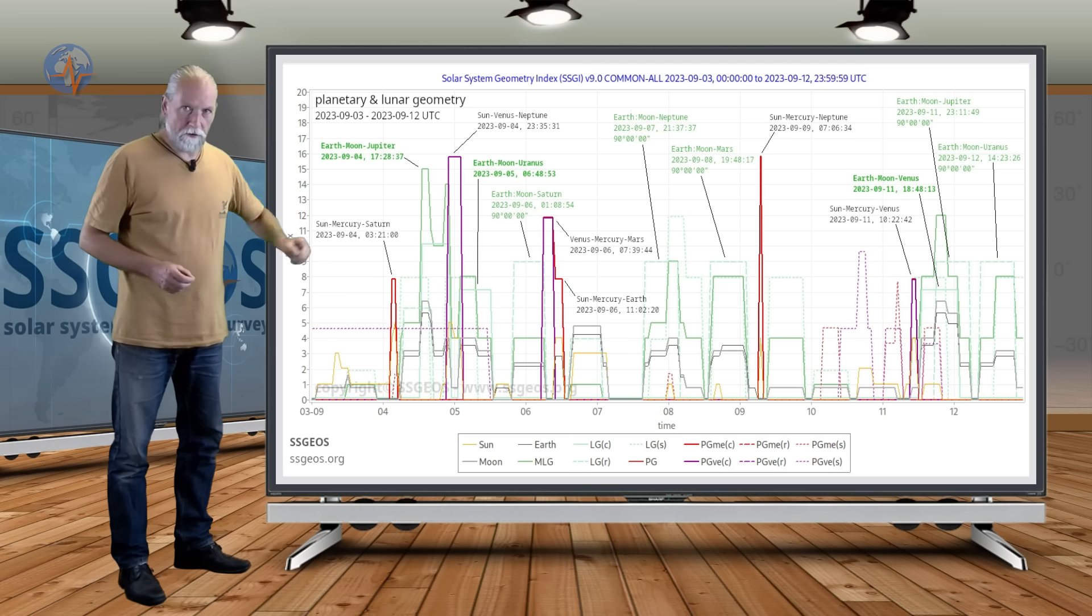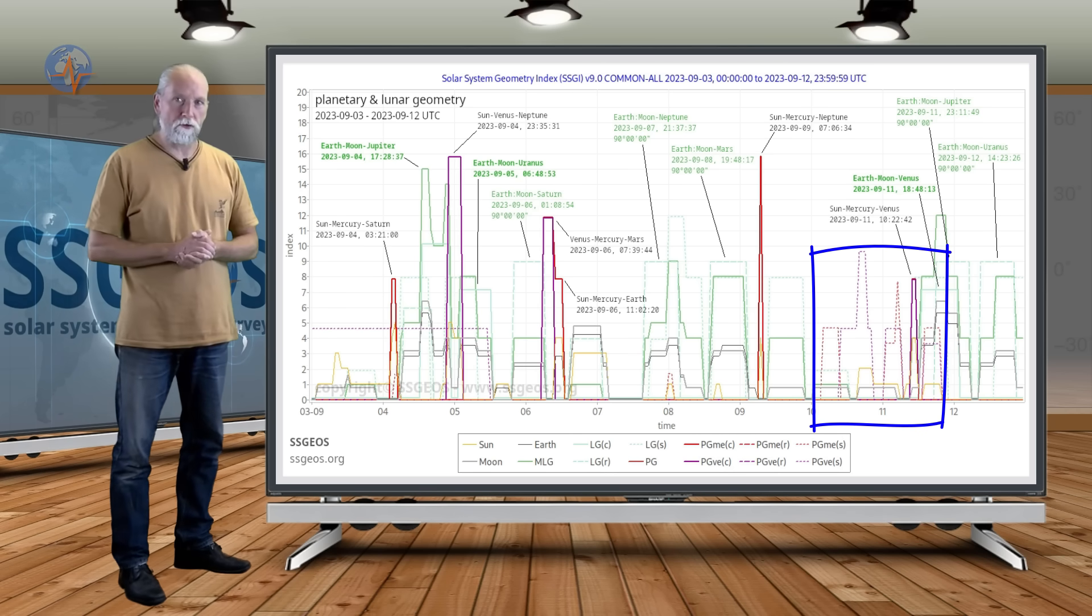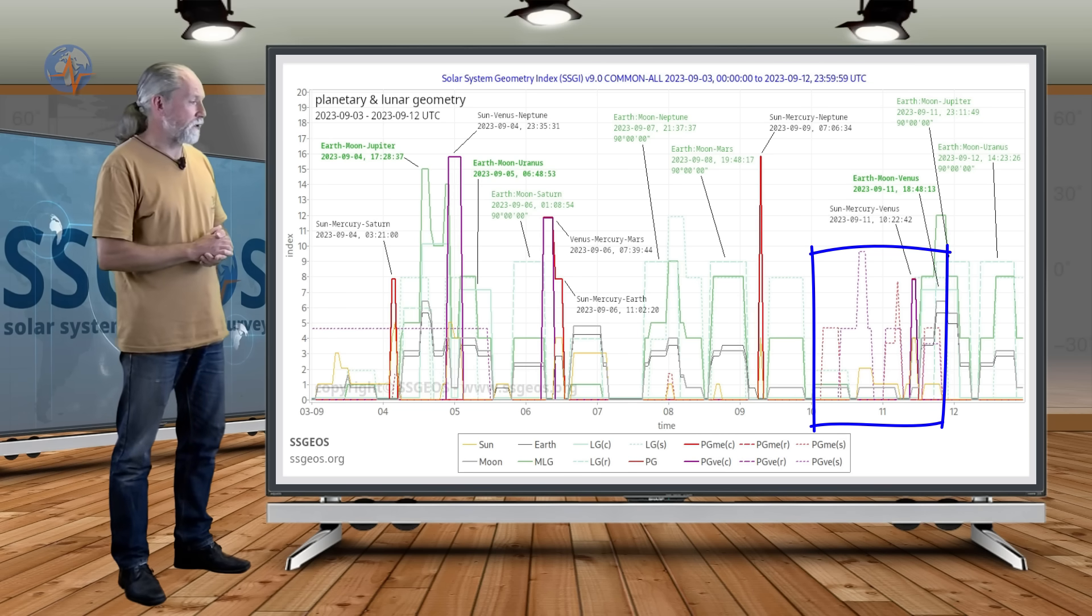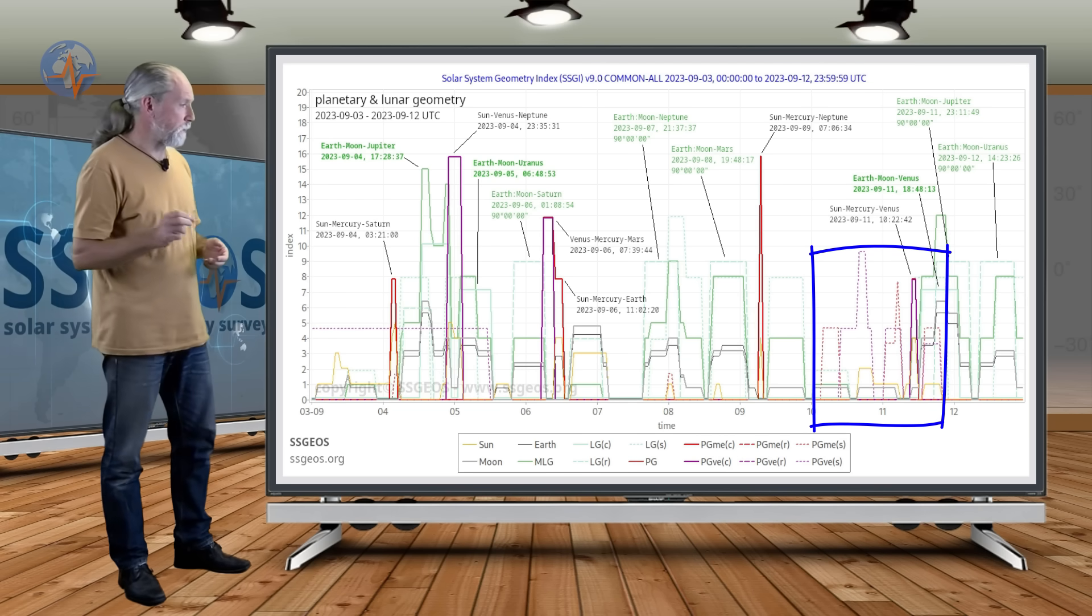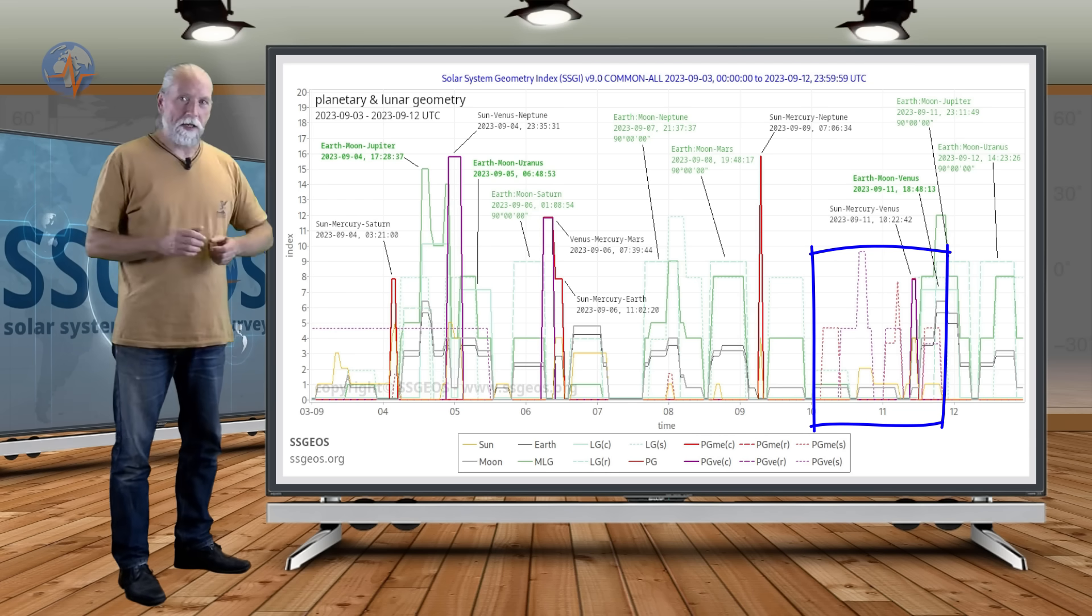But then on September 10th and 11th, we have a convergence of critical planetary geometry involving Mercury and Venus—these are the red and purple peaks. It starts on the 10th with dashed peaks. They indicate semi-right angles.